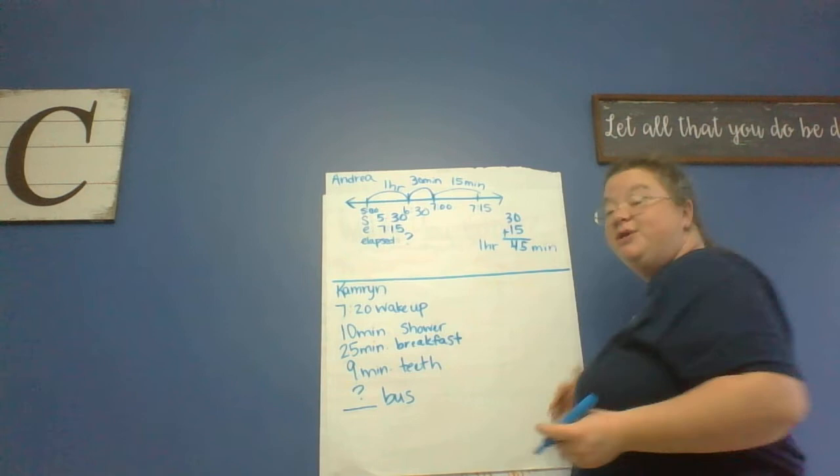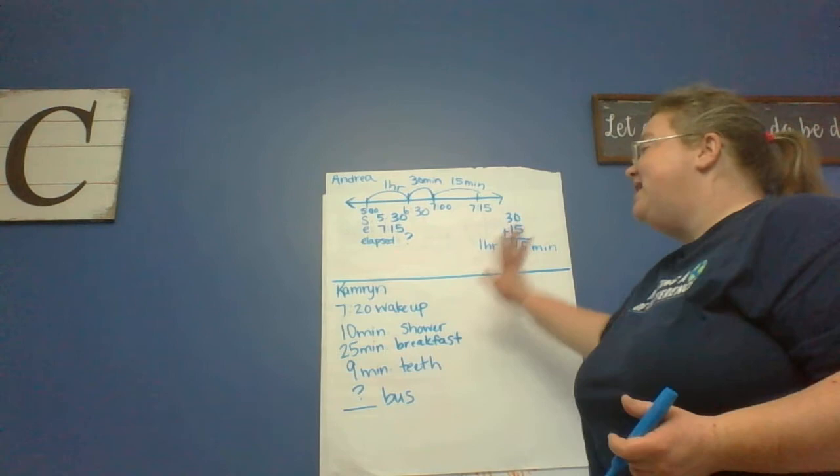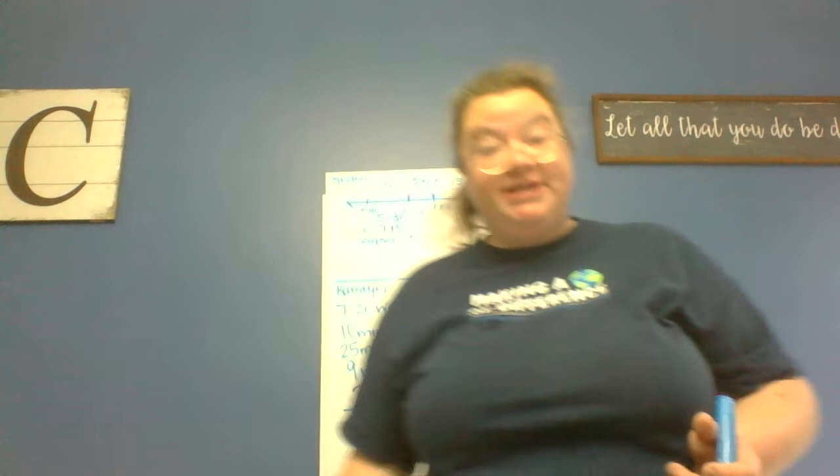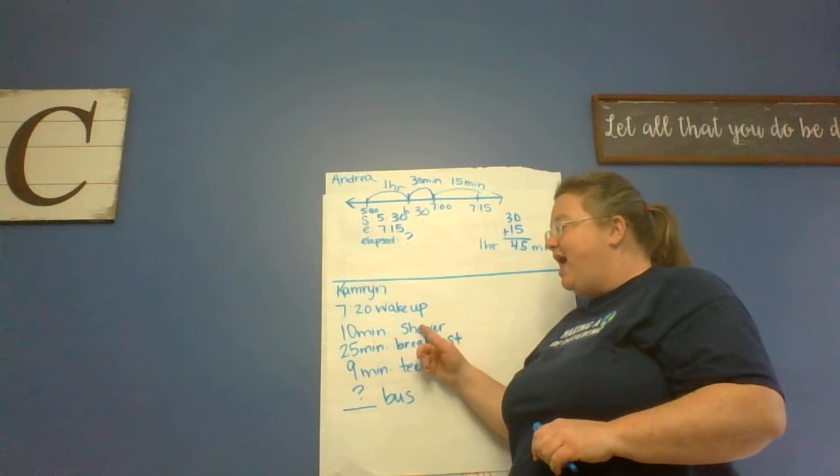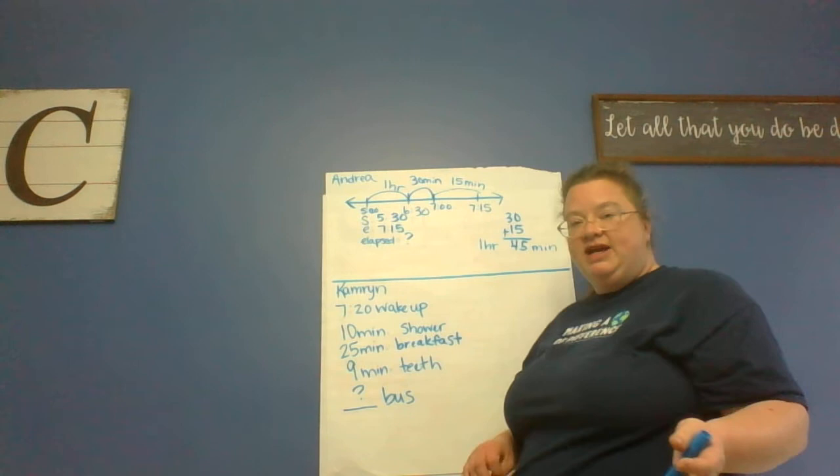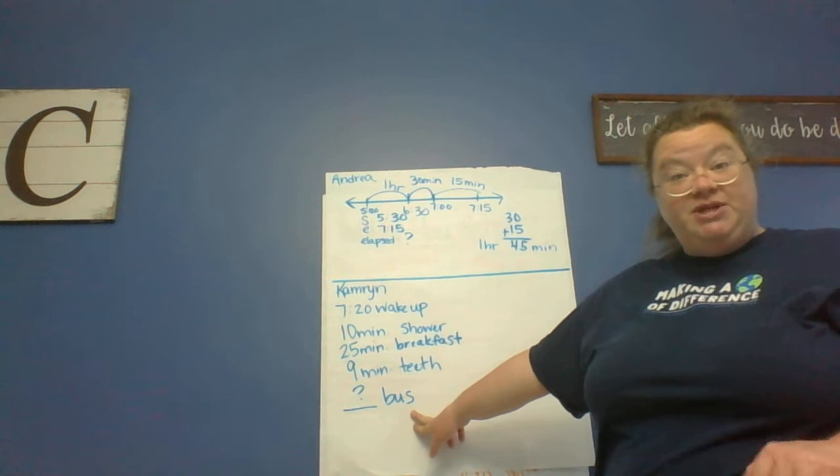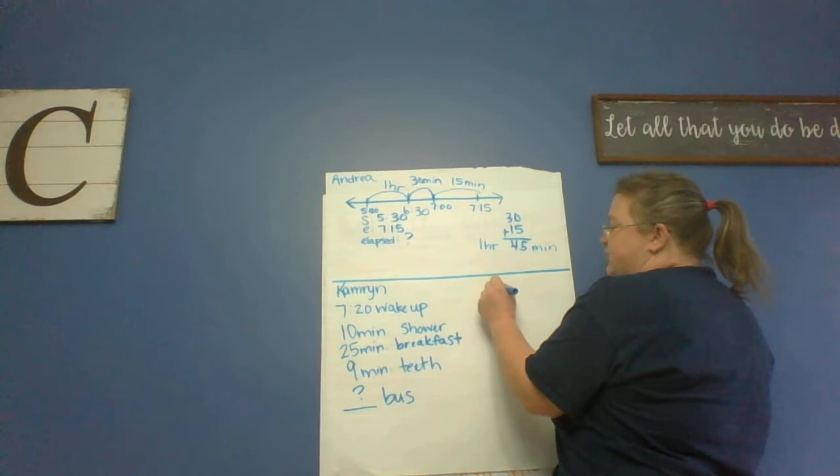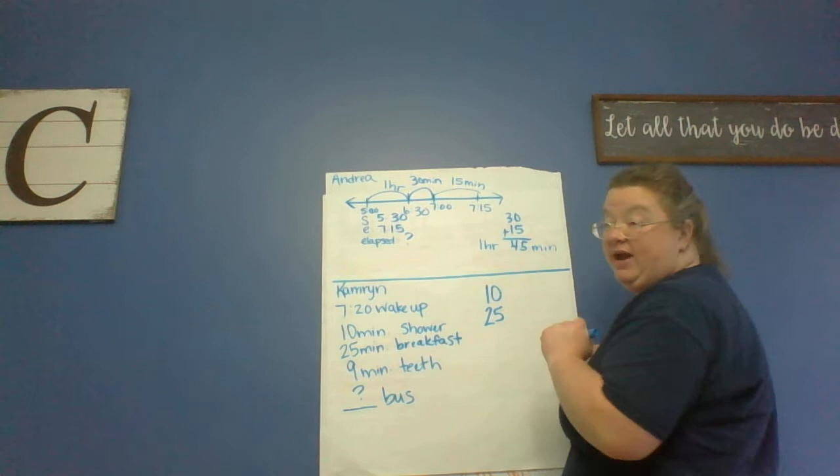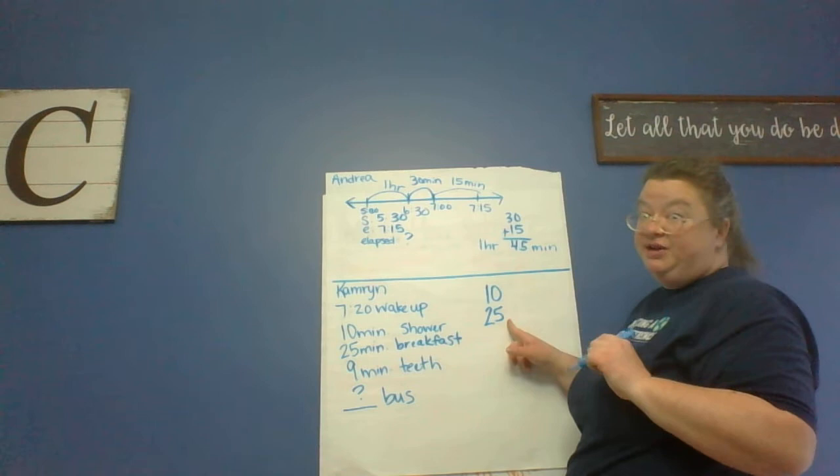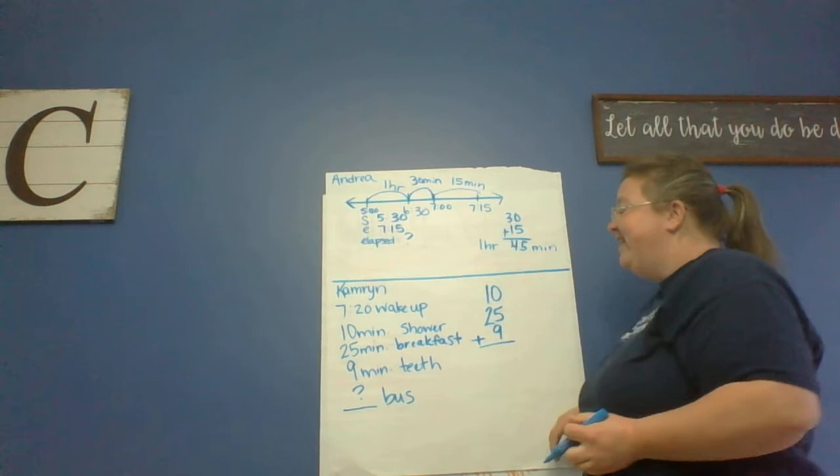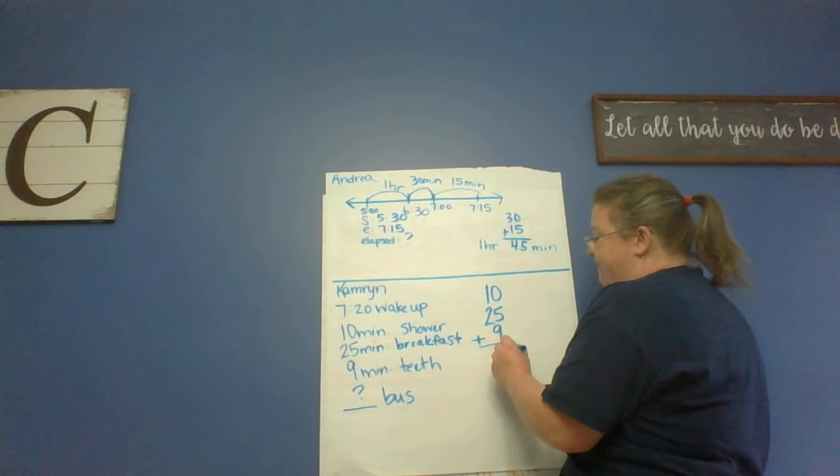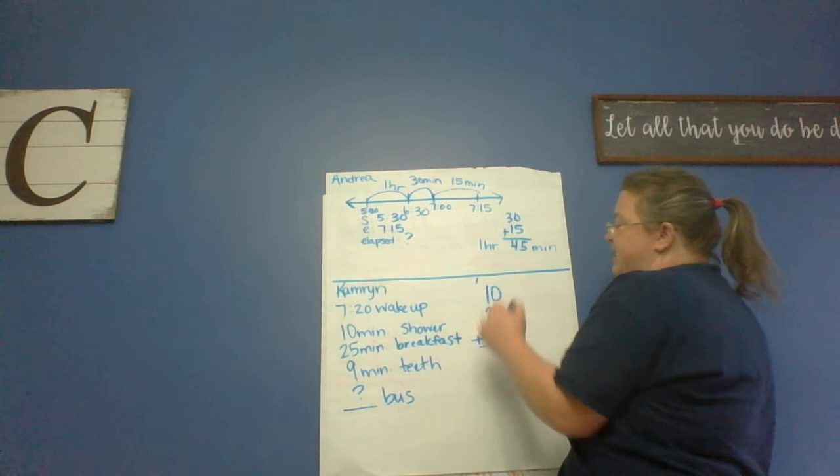All right, now Cameron. Cameron needs to know what time her bus comes. I've written everything that we do know. We know her start time and we know all these things in the middle, but we don't know the end time. So we're going to do this kind of like we did yesterday. Add these times up and see if we can figure out what time she better start running before she misses her bus. She started at 7:20. I'm going to ignore that for now. I'm going to figure out how much time she has. She's taking a shower for 10 minutes, eating breakfast for 25 minutes, that's about right Cameron, especially at school. Nine minutes to brush her teeth. So we're going to add these times up: 9 plus 5 plus 0 is 14, carry my 1, 2 plus 1 is 3 plus 1 is 4. So 44 minutes. So all of her getting ready for school things take her 44 minutes.